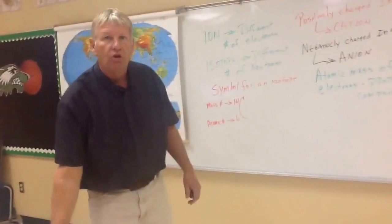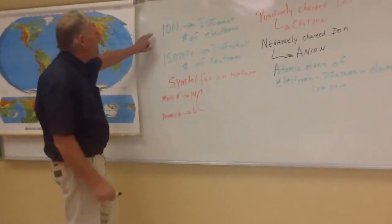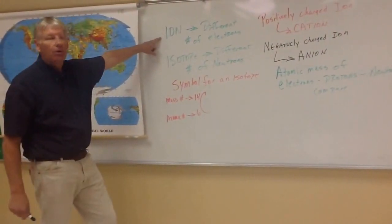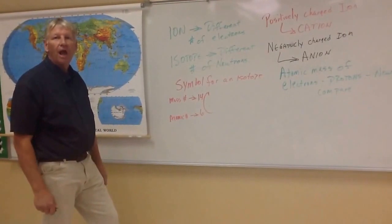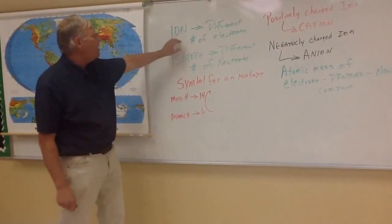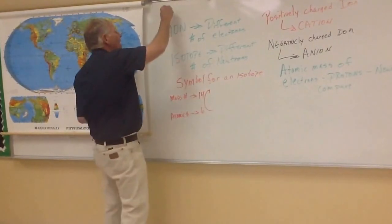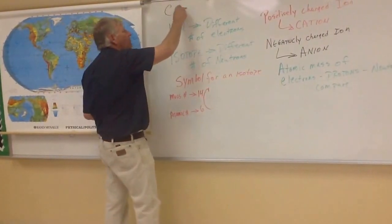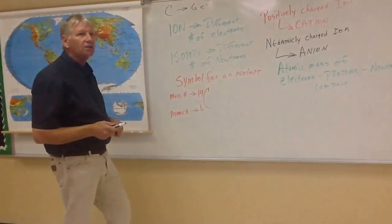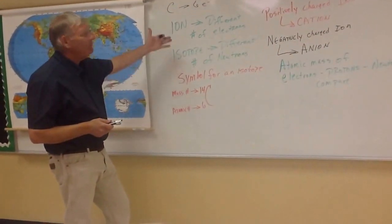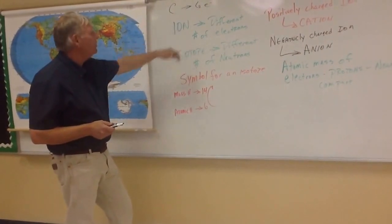In its stable form, if we have an element with a different number of electrons, that's called an ion. An ion is a different number of electrons. For example, carbon should have six electrons because the atomic number is six. If it has five, then it's an ion. If it has seven, it's an ion. So an ion is a different number of electrons.